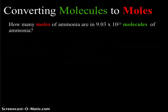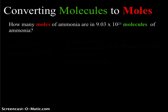Here we have a basic problem converting molecules to moles. The question is: how many moles of ammonia are in 9.03×10²³ molecules of ammonia? We remember from previous videos that one mole equals 6.02×10²³ molecules, atoms, particles — whatever it may be. That's 602 hexillion, quite a lot of molecules in that sample of ammonia. What we're trying to find is how many moles that many molecules represents.